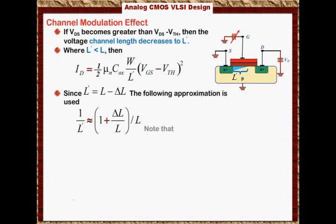Also, note that delta L over L is proportional with VDS. What we are saying is the decrease in the channel length, the decrease is delta L. Delta L over the overall channel is proportional to VDS. And we go on to say that this will equal to lambda times VDS, whereas lambda is the channel modulation index.